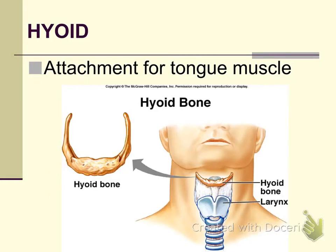The hyoid bone is also part of the axial skeleton. It's just at the base of the jaw, and it is a horseshoe-shaped bone. It is considered a sesamoid bone, which means that it is not attached to any other bone — it is completely surrounded by muscle.